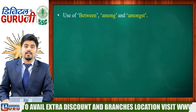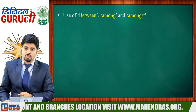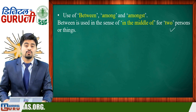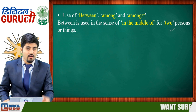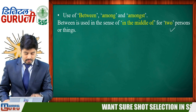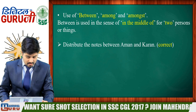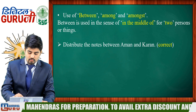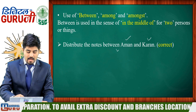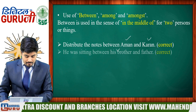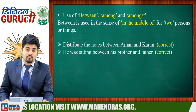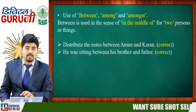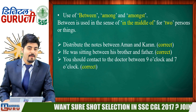Here we have between, among, and amongst. The first one is 'between.' The general use of 'between' is in the middle of two people or two things. For example: 'Distribute the notes between Amun and Karan' — two people, one is Amun, another is Karan, so we use 'between.' Also: 'He was sitting between his brother and father.' So the general rule is: for two people or two things, use 'between.'